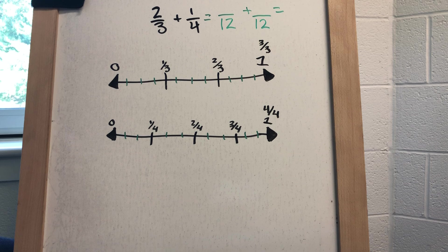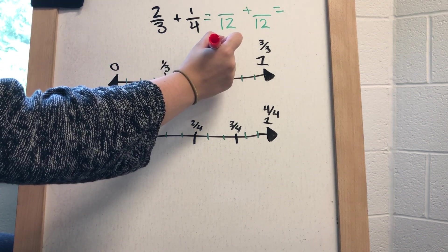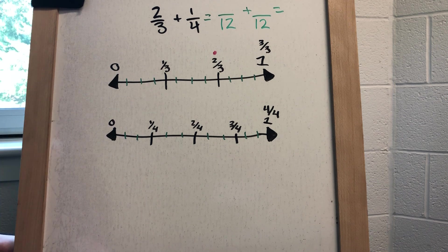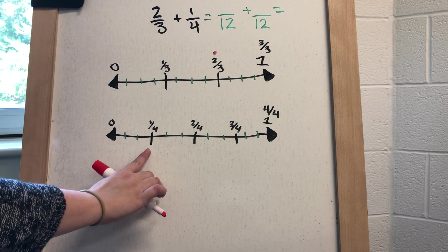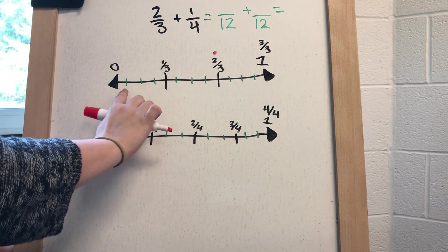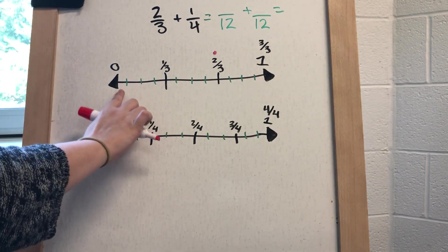Now in order to actually add the numbers, we are going to look at where two-thirds is. I like to just make a little dot to note where that is, and we are going to add a fourth. So in order to do that...